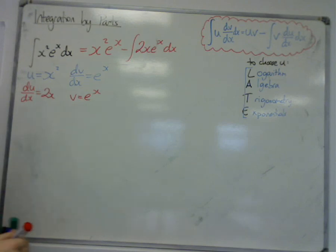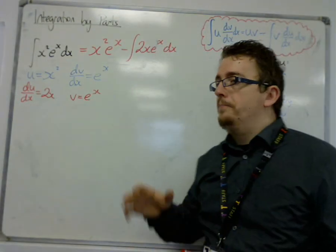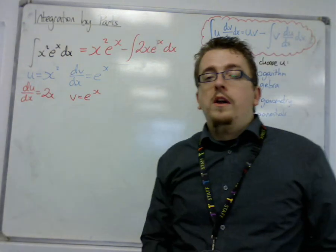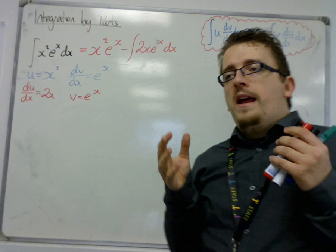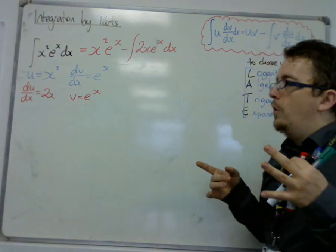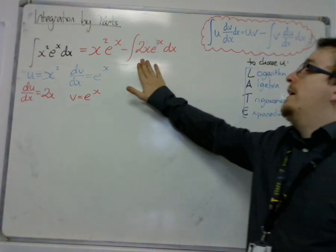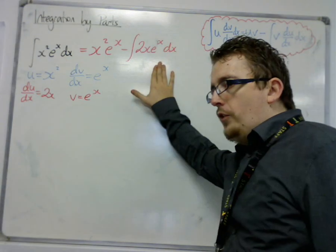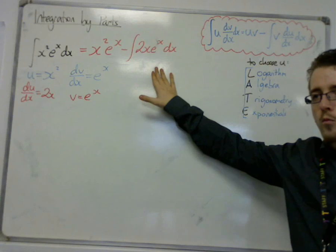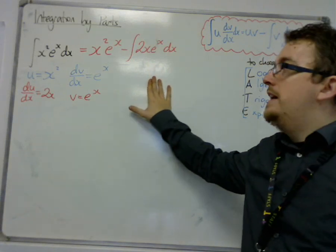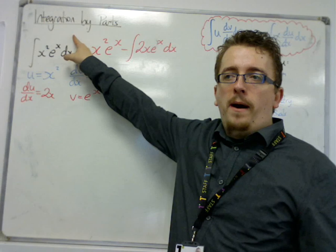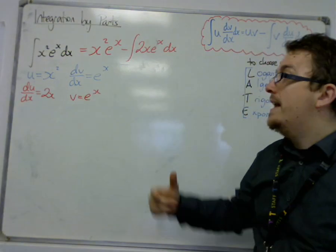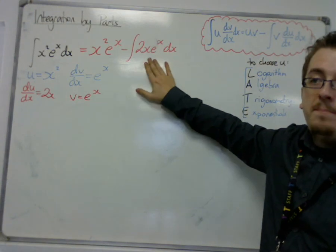So when we got to this process last time, or this step last time, we found ourselves with an integral that was nice and straightforward for us to integrate. However, take a second look at what we have. We have 2x e to the x here, which is a product of functions, which means we only have one way of dealing with 2x e to the x now, and that is by integration by parts. So we have to do the process all over again in order to integrate this thing independently.